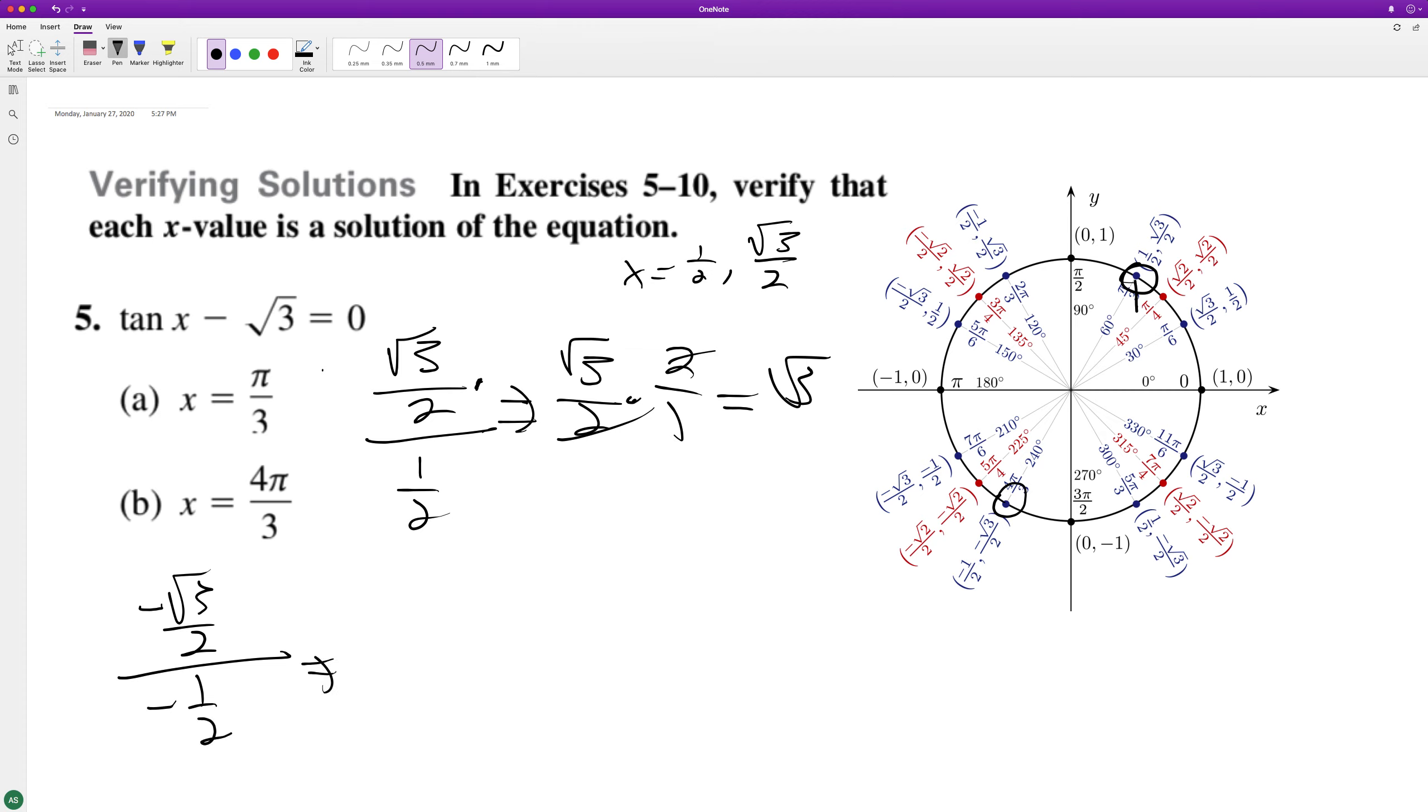Which is the same thing as negative root 3 over 2 times negative 2, which gives us positive root 3 because there's two negatives and when you divide a negative by a negative it's a positive, minus root 3 equals 0. So they both check out.